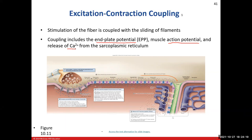Calcium is like that princess held captive in the tower. The sarcoplasmic reticulum terminal cisterna are going to be that tower, and calcium is going to be the princess. We need to get calcium out of the sarcoplasmic reticulum and into the sarcoplasm. The sarcoplasm is where our contractile proteins — actin and myosin, our thick and thin filaments — are located. Calcium is stored in the sarcoplasmic reticulum, which is outside of the sarcoplasm.